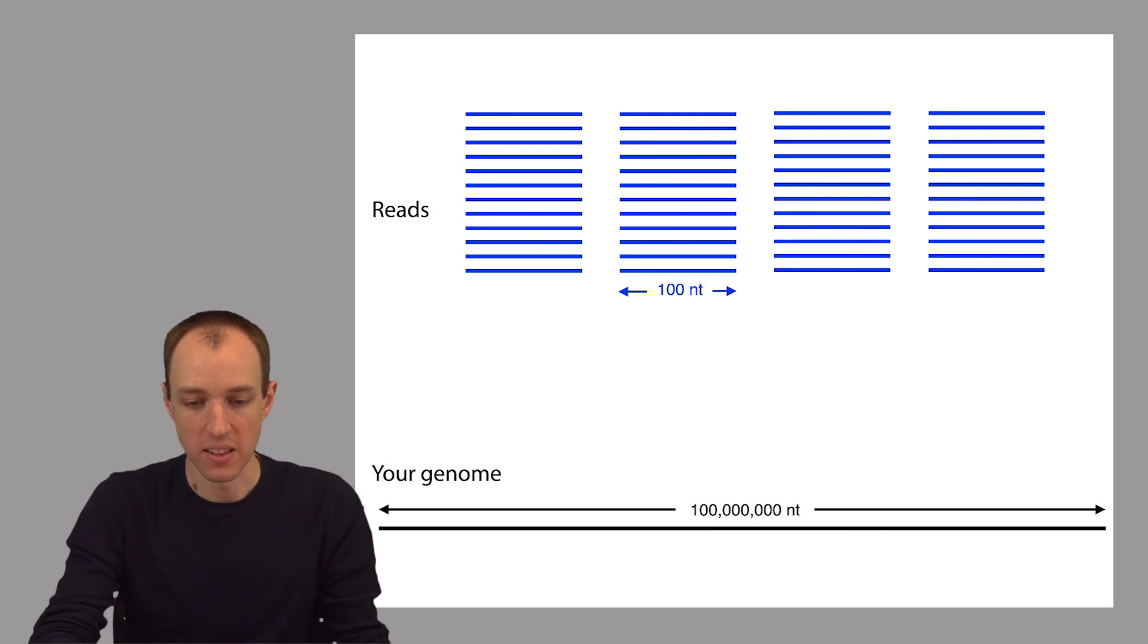But the good news is that we get lots and lots and lots of these short snippets of DNA. Usually we have enough of these reads to cover the whole genome over, many times over. In other words, we have redundant information about any given base of the genome that we're sequencing.